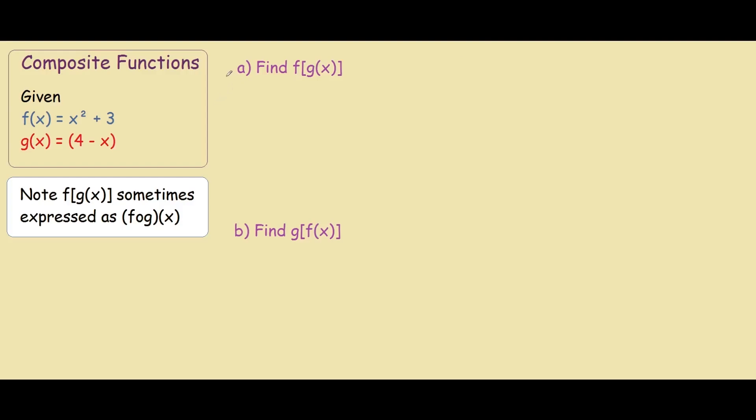Hey guys, the aim of this video is to quickly show you the steps on how to find f of g and g of f. So let's begin our problem. We're given that f equals x squared plus 3 and g equals 4 minus x.